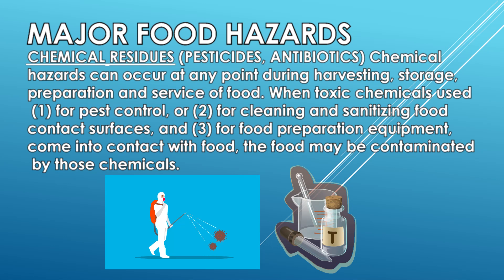Chemical hazards can occur at any point during harvesting, storage, preparation, and service of food. When toxic chemicals come into contact with food, the food may be contaminated by those chemicals. Examples include pesticides and antibiotics.